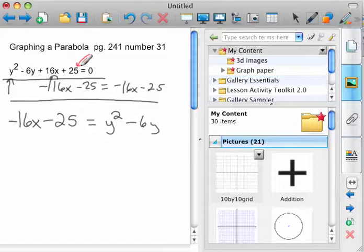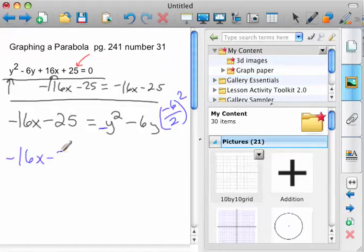Well, just like normal, you complete the square. The quadratic term is 1, so you don't have to take anything out. So we're just going to take that negative 6, divide it by 2, and square it. And so we've got negative 16x minus 25 equals y squared minus 6y, and then it'd be plus 9. Because 6 divided by 2 is 3, and 3 squared is 9.